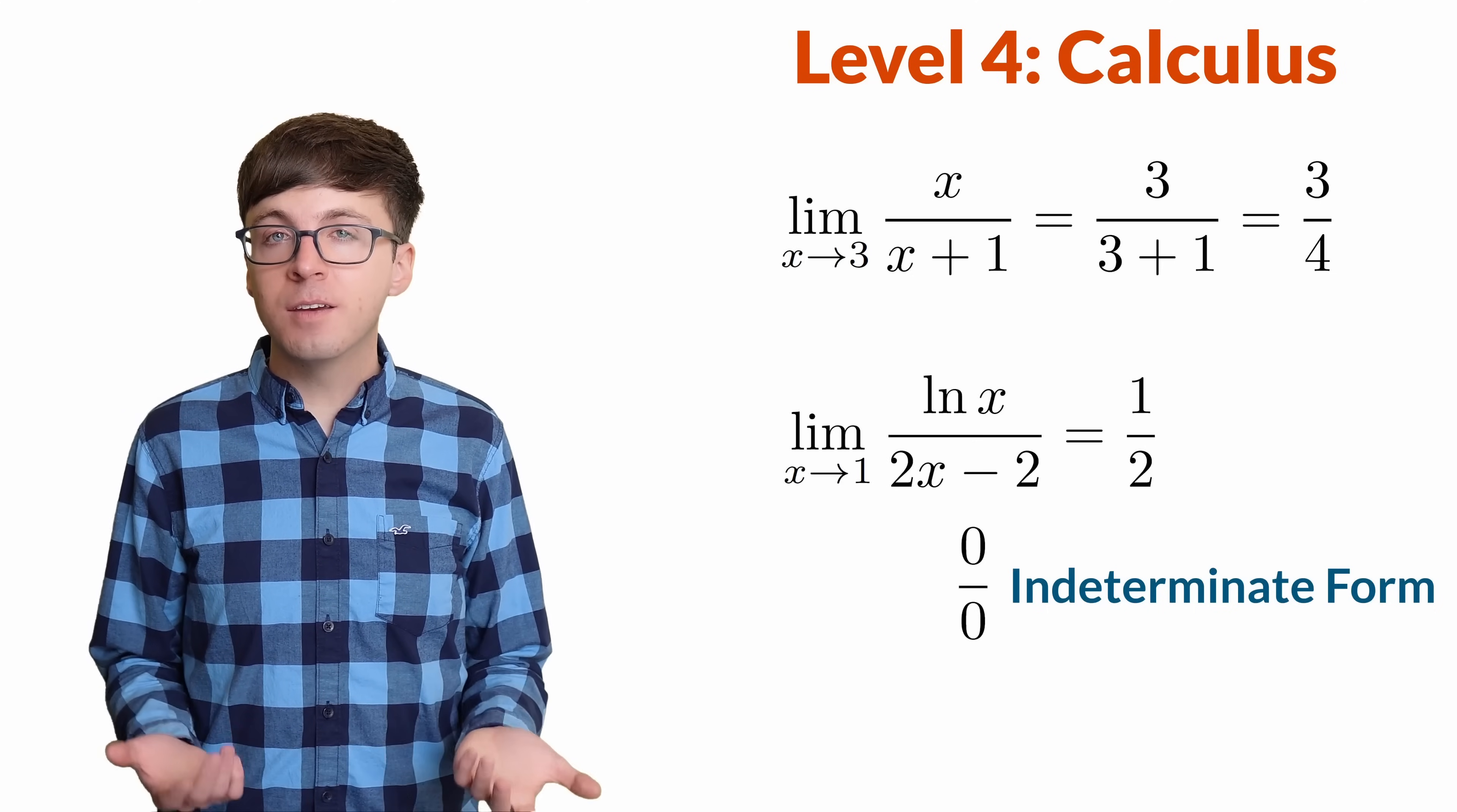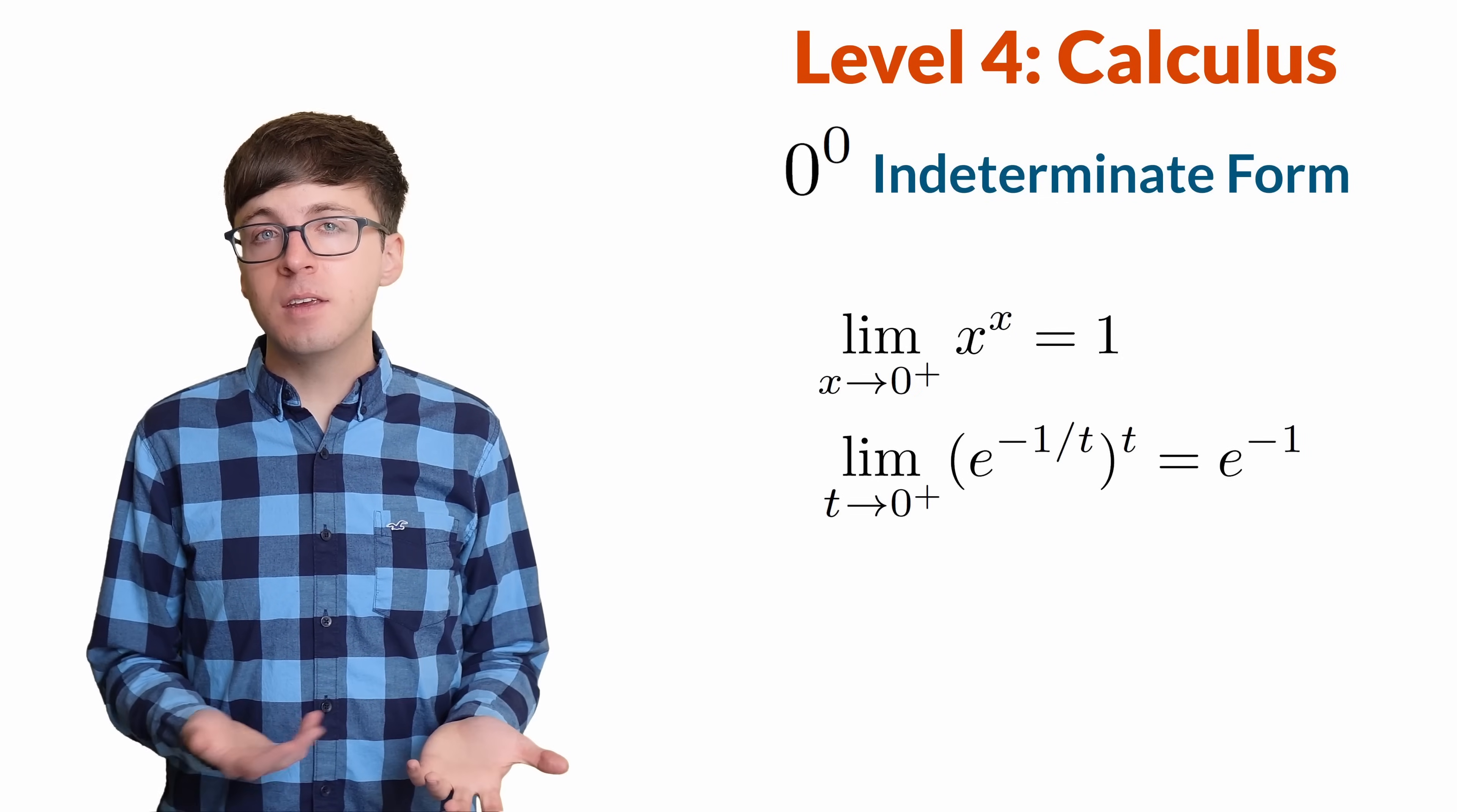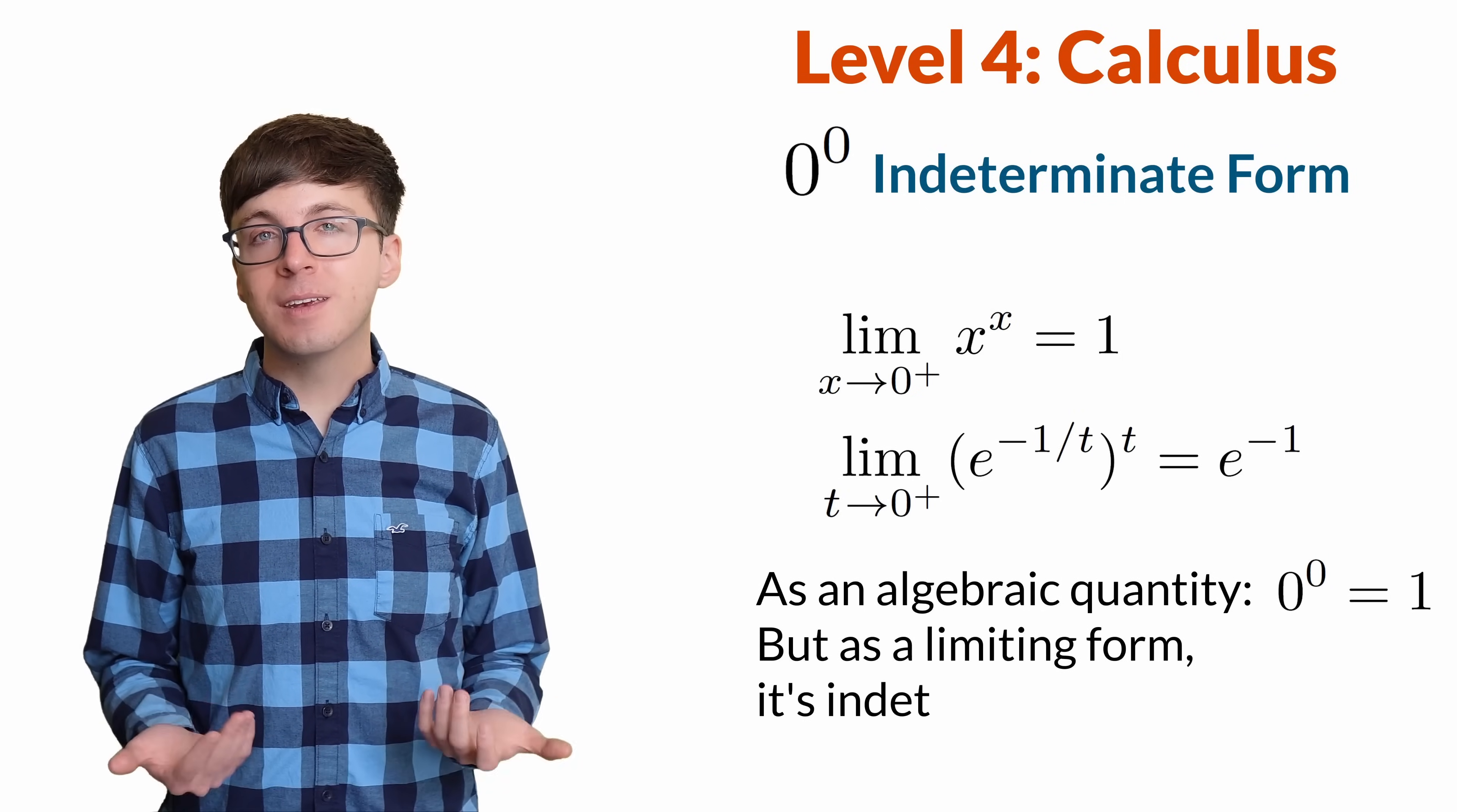0 to the 0 is another indeterminate form. Let's look at a couple limits with this form. The limit as x approaches 0 from the positive side of x to the x is 1. But if we take the same limit of the function e to the negative 1 over t to the t, we get e to the negative 1. That function actually just simplifies to e to the negative 1 by multiplying the exponents. Limits of the form 0 to the 0 can have all sorts of different answers, so we say that 0 to the 0 is an indeterminate form. As an algebraic quantity, it often makes sense for us to define 0 to the 0 equals 1. But as a limiting form, 0 to the 0 is indeterminate.